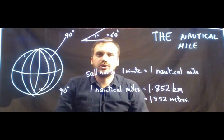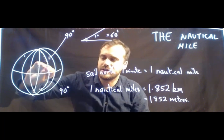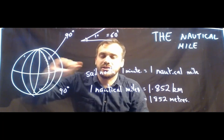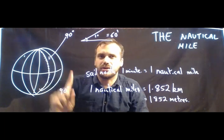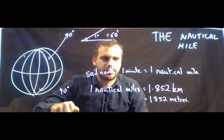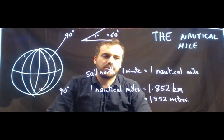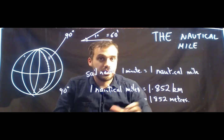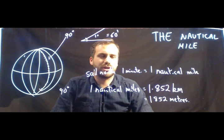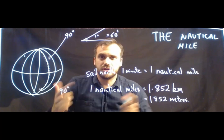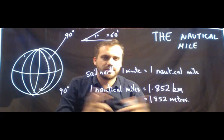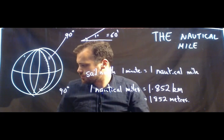That's really it for that video. I just want you to understand that the nautical mile is related to the angle here. It's related to one minute of sailing either north or south. It's also equal to 1.852 kilometres, or 1,852 metres. In the next video, we'll learn to do some conversions between nautical miles and back to kilometres.